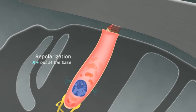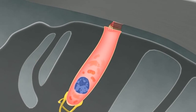Potassium out at the base of the hair cell. The hair cells convert vibrations into neural impulses sent to the brain. Your brain then interprets these nerve impulses as sound.